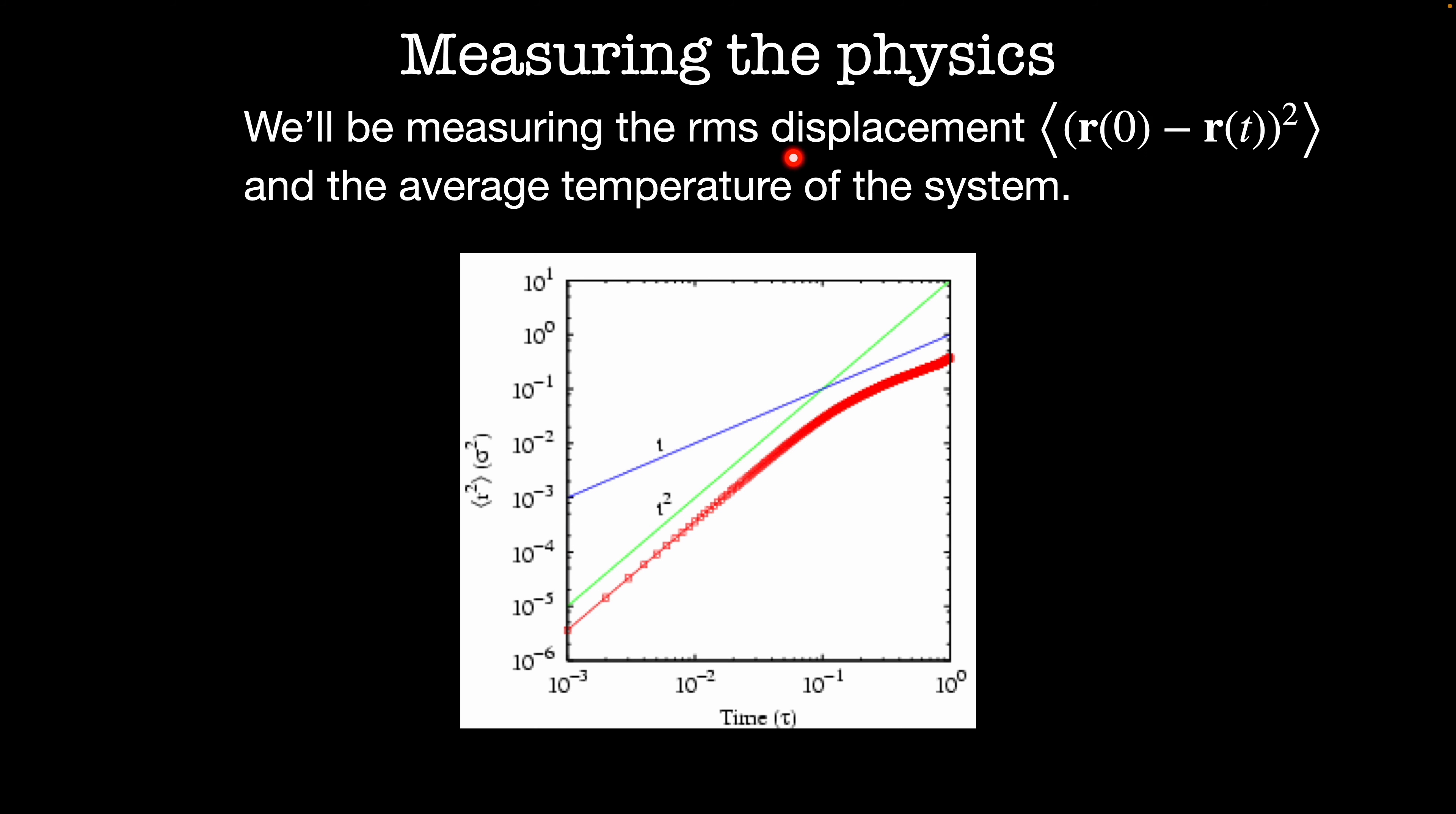For our Lennard-Jones gas, we'll be measuring a quantity called mean squared displacement, which is the average of the squared distance from the initial position to the position as a function of time. This average is taken over all of the particles of the system and at different starting times. At short times, we can basically turn off the interactions so the particles can move freely according to their velocities. They move the same way they would in free space. This is called ballistic motion. This means that position changes according to t times the velocity. So the mean squared displacement scales like time squared. This corresponds to the slope of 2 on this log-log plot.